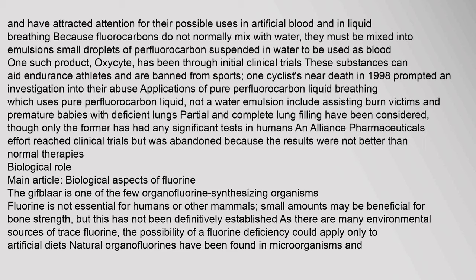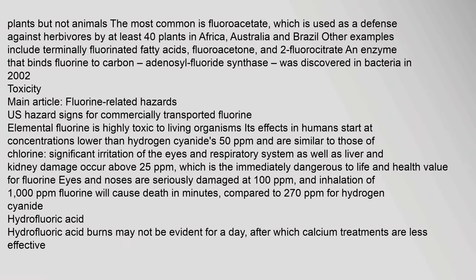Fluorine is not essential for humans or other mammals; small amounts may be beneficial for bone strength, but this has not been definitively established. The possibility of a fluorine deficiency could apply only to artificial diets. Natural organofluorines have been found in microorganisms and plants but not animals. The most common is fluoroacetate, used as a defense against herbivores by at least 40 plants in Africa, Australia, and Brazil. Other examples include terminally fluorinated fatty acids, fluoroacetone, and 2-fluorocitrate. An enzyme that binds fluorine to carbon, adenosyl fluoride synthase, was discovered in bacteria in 2002.